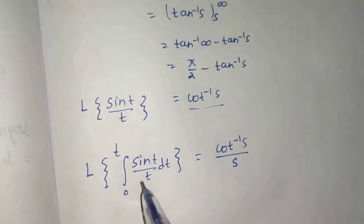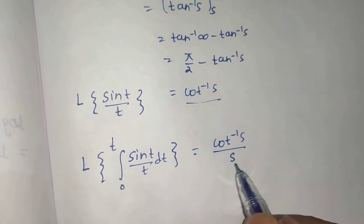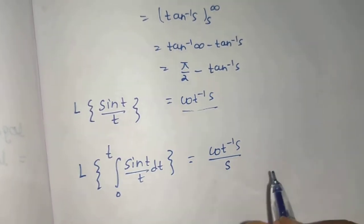So cot⁻¹(s) divided by s. Why we have done this? Because we have integrated once, so divide by one s.